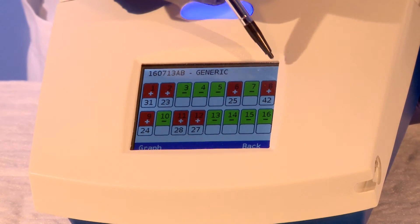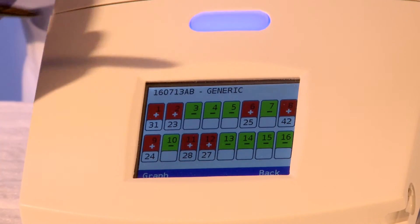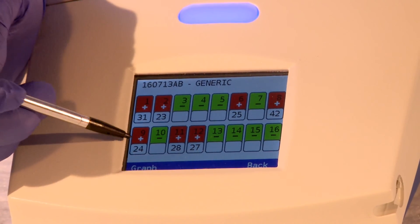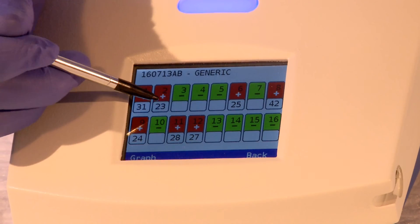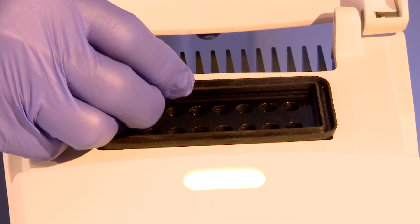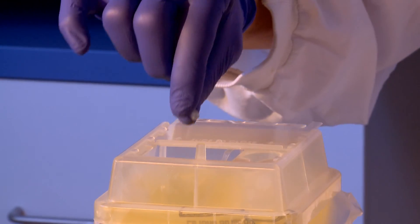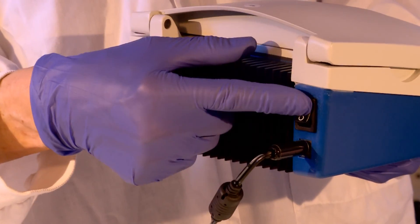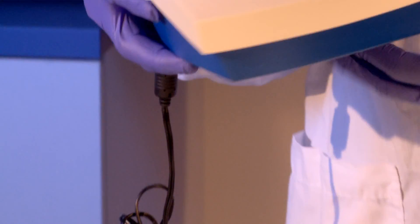If a reaction is positive, the numbered tabs will change to red and the time at which the reaction occurred is listed on the tab. Negative reactions will change to green. Note the results. Remove the test tubes and dispose of them in a biohazard receptacle. Press Done to complete the reading and turn off the machine.